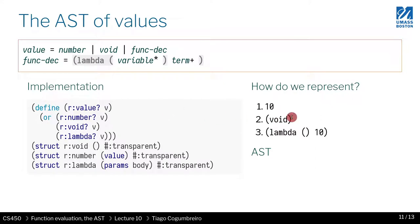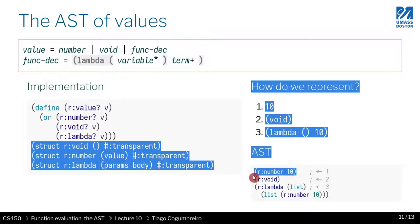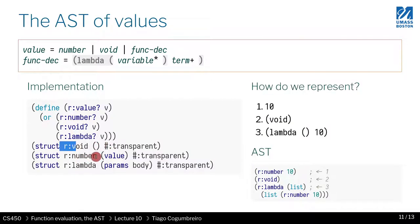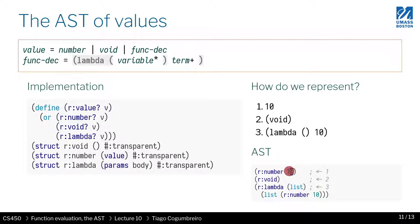The first one is the number 10. How would I represent the number 10 in my AST? Well, it's a value, so it's not a void and it's not a lambda, so by exclusion it can only be a number. We create it by calling our-number, which is the constructor of the number value. It takes one parameter assigned to the field value, so when I create (our-number 10), I'm creating a representation of the number 10 and storing its contents in that data structure.